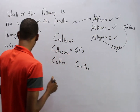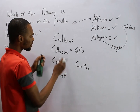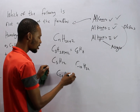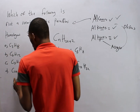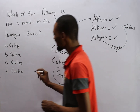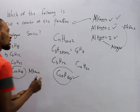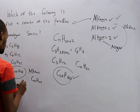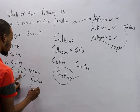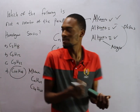Now look at this fourth option. If C is 24, we have C₂₄. The hydrogen should be 24×2+2=50. So if this were an alkane, the formula would be C₂₄H₅₀. But the given formula has hydrogen that does not match, meaning it follows CₙH₂ₙ with C=24 giving 48 hydrogens. This makes it an alkene or olefin, not a paraffin.